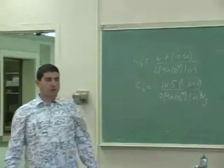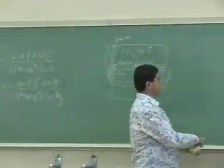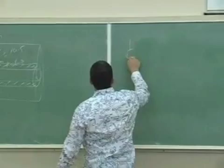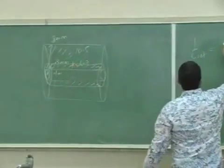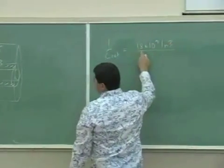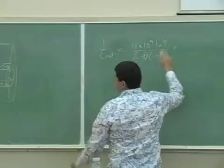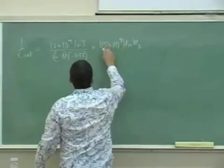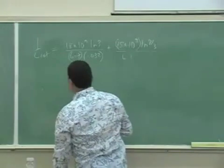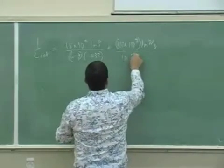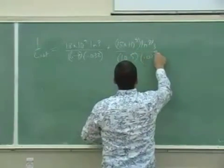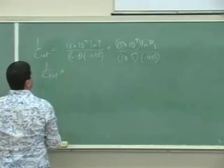Now, how do I add them? 1 over C1 plus 1 over C2. So I can do 1 over C2. This is going to equal 1 over C1. So I invert that. It's going to be 18 times 10 to the 9th. Ln of 3 divided by 6.7 times 0.032. Plus, I'm inverting both of them. 18 times 10 to the 9th. Ln of 8 thirds divided by 10.5 times 0.032. I can factor out 18.